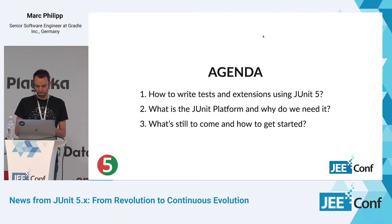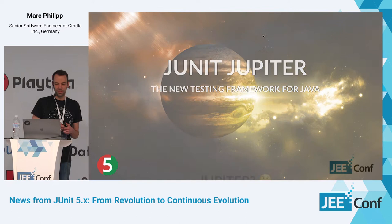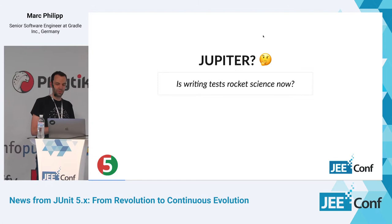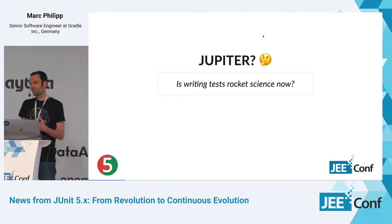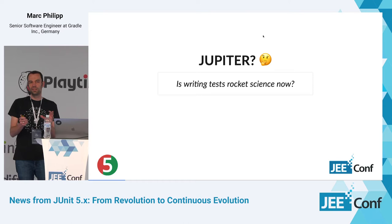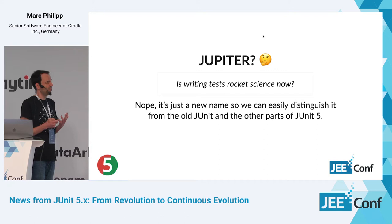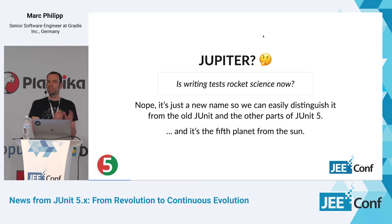First of all, JUnit Jupiter — the new testing framework for Java. You might ask yourself: why Jupiter, what's with the name? Is writing tests rocket science now? I can assure you it's not — it's still pretty simple. We needed a new name to distinguish the different parts that are now JUnit 5. It's not just the version number. Also, it's the fifth planet from the Sun, so there's a small reference to the number 5. But if we ever release JUnit 6, we might keep the name Jupiter.